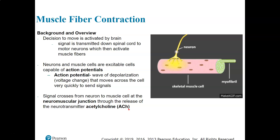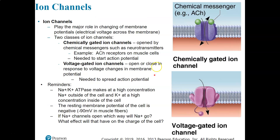Acetylcholine is the neurotransmitter released by the neuron that's going to trigger contraction in the skeletal muscle cell. This signal causes a change in the electrical properties across the cell membrane, involving the movement of ions. Ions are charged particles that cannot move directly across the cell membrane because the hydrophobic tail groups block them, so we need membrane proteins such as ion channels. Ion channels can be chemically gated — opening when they receive a chemical signal like acetylcholine — or voltage gated.